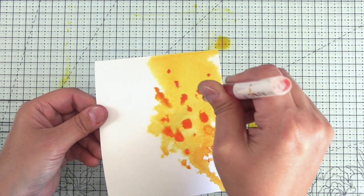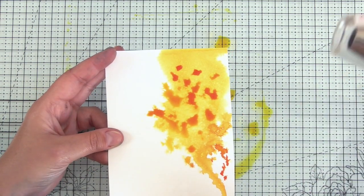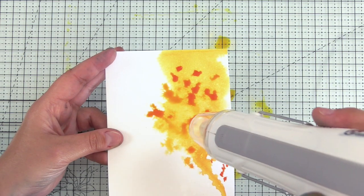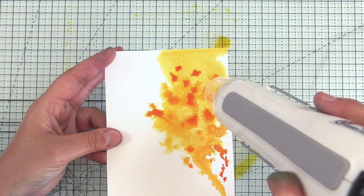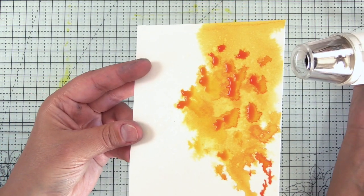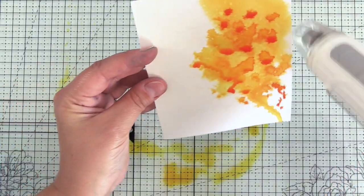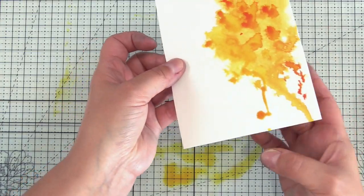So I went ahead and heat set it. I sprayed it with a little more water and I'm dropping in more pigment. So now you can see I'm drying the full pigment with my heat tool and I have it on the lower setting. This is a dual speed heat tool from Wow, and I'm just heating those droplets so that I get some of those hard edges.